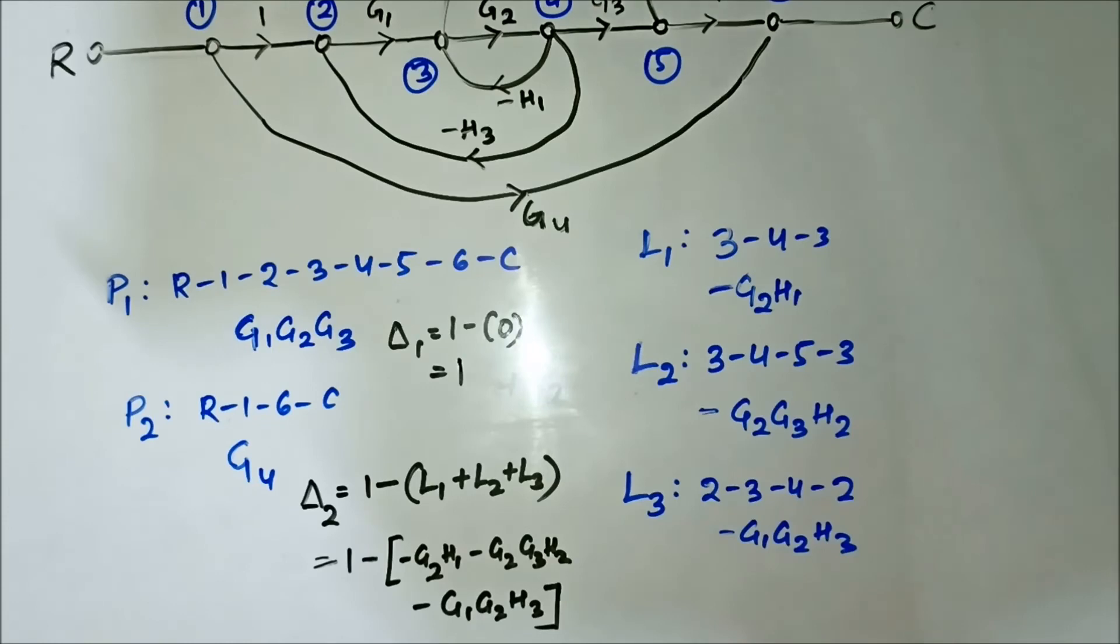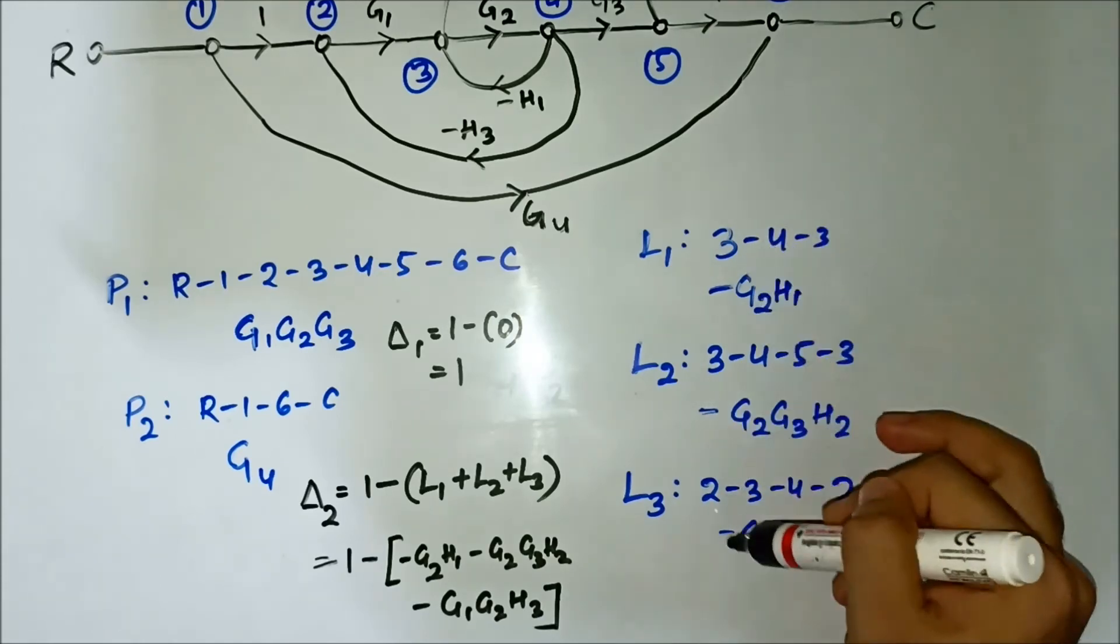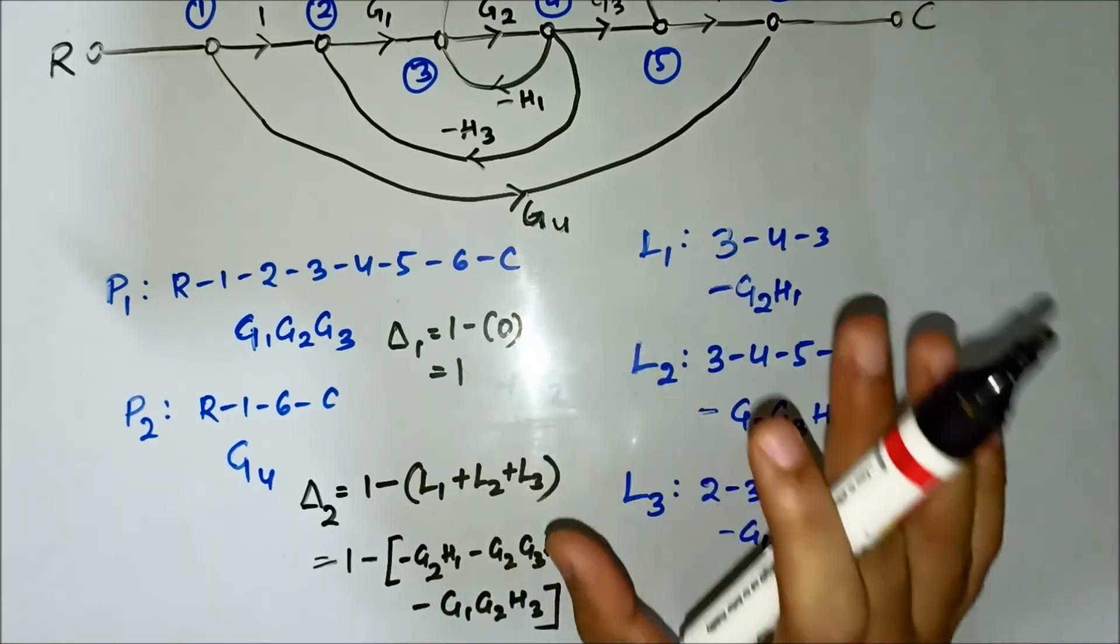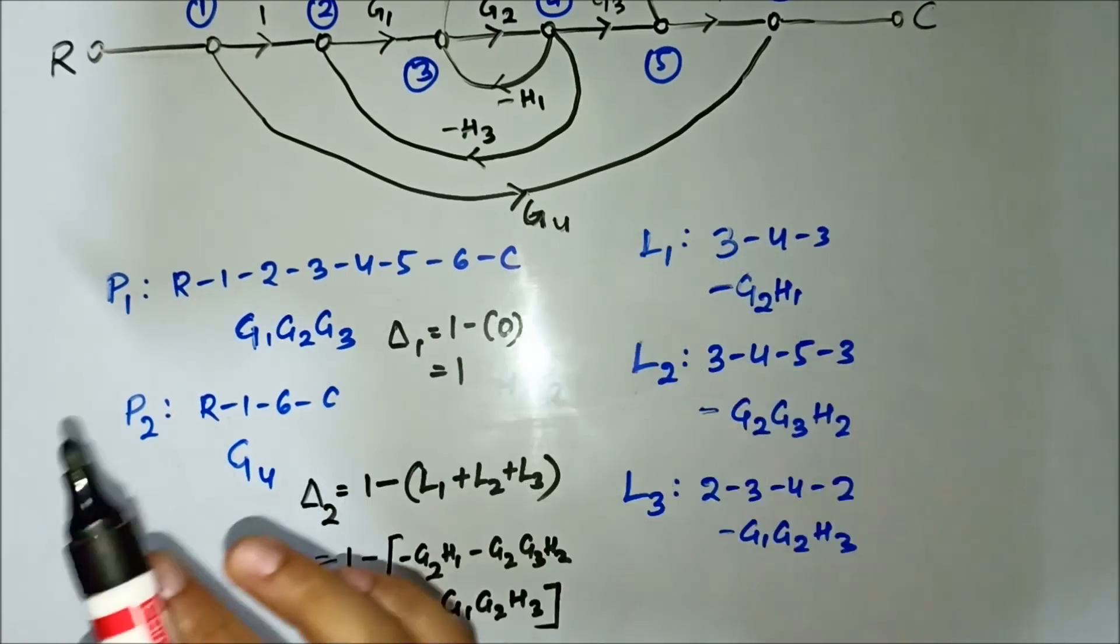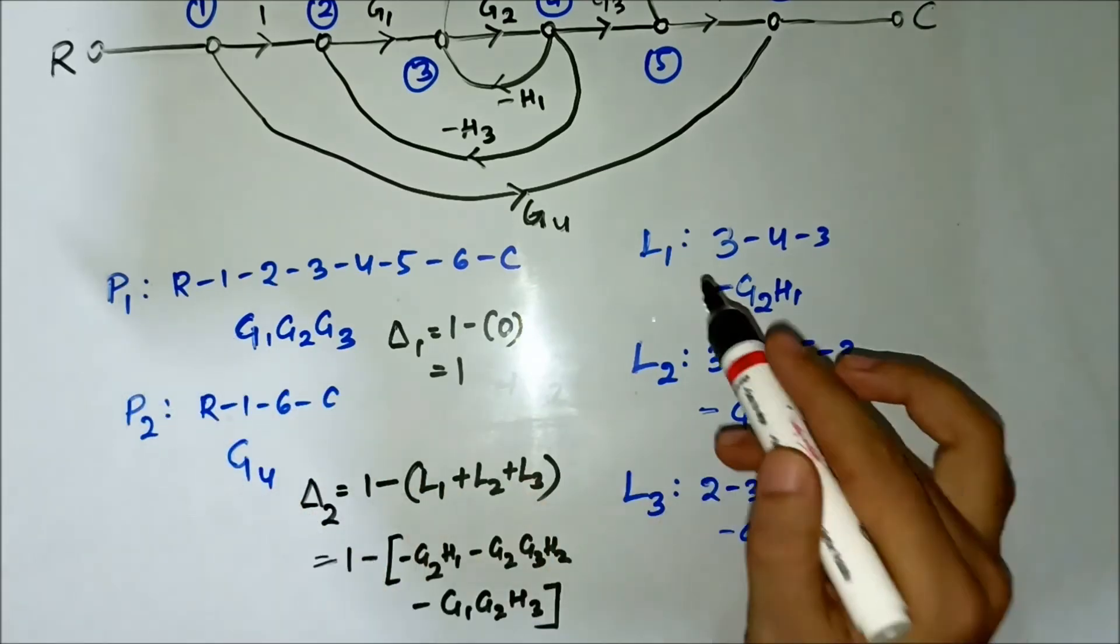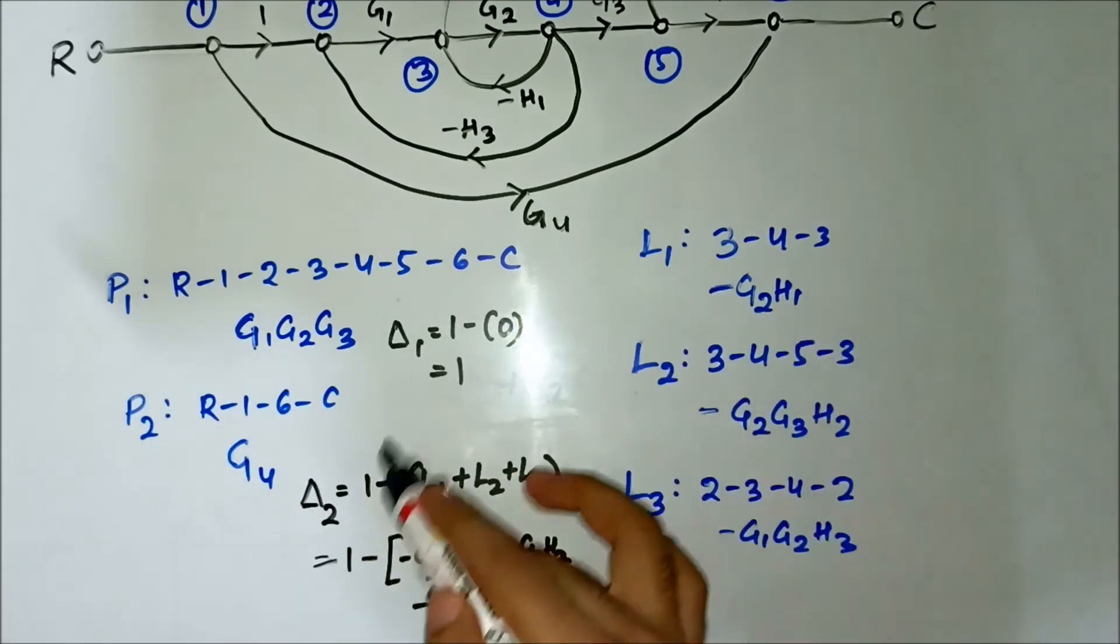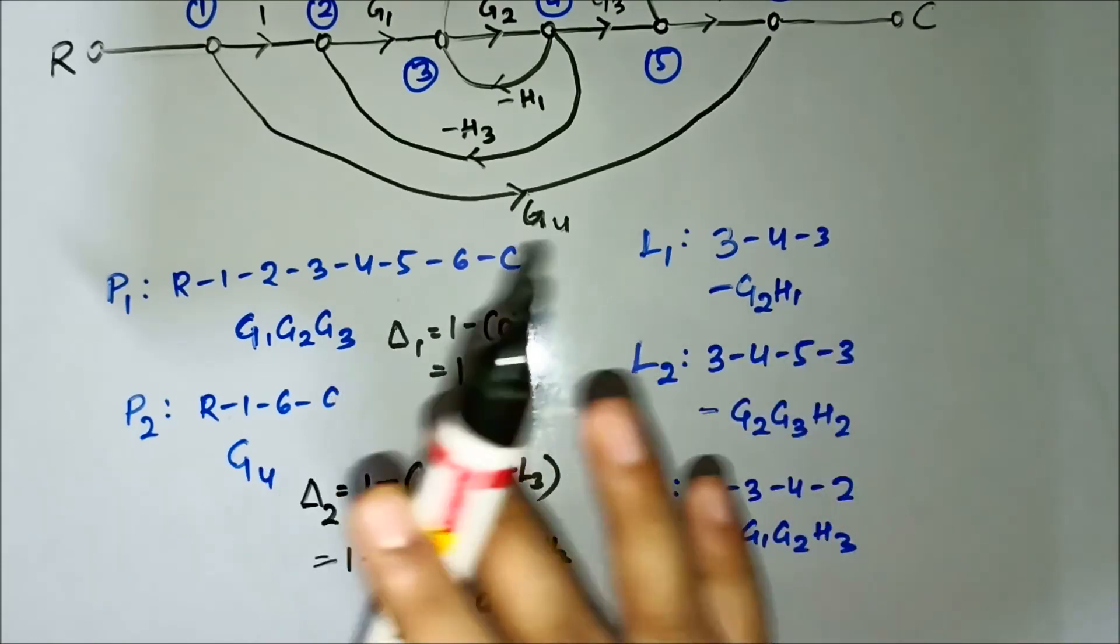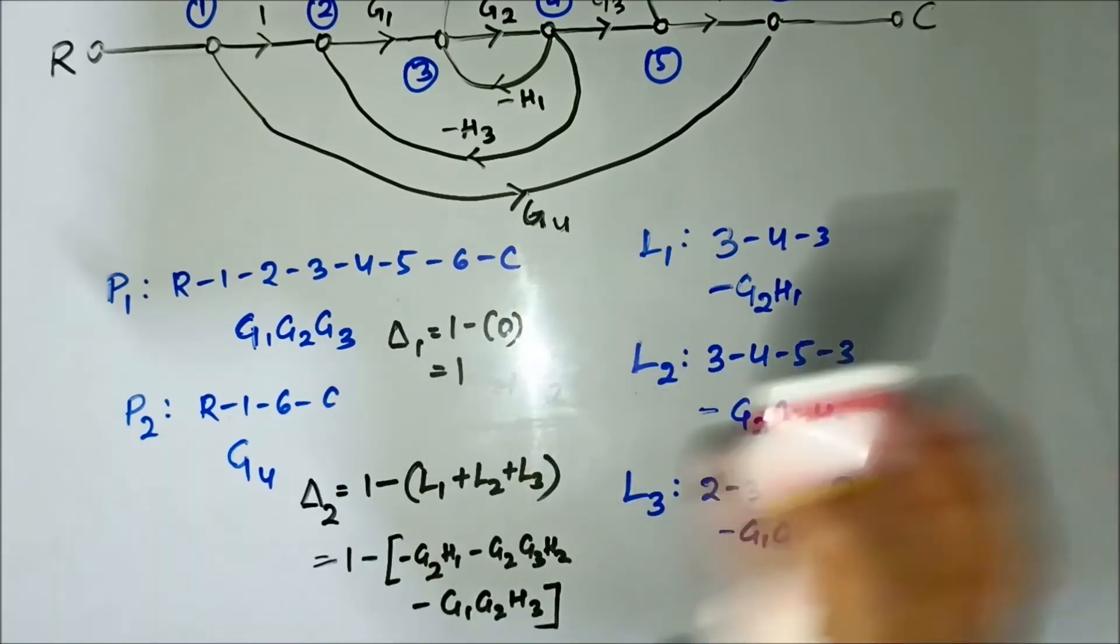Again, to find out whether the loops are touching each other or not, see whether they have any common nodes in between. See, 3 is common in all of these loops, so they are all touching each other. So we have found out P1, P2, the forward paths, the gains, the loop gains, the path factors. Now simply we have to put these values in the Mason's gain formula equation.